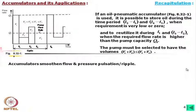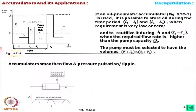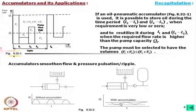Accumulators also smooth flow and pressure pulsation or ripple. A system without an accumulator may have pulses, and if you put an accumulator then this pulsation is reduced — though it may not be possible to eliminate it completely.